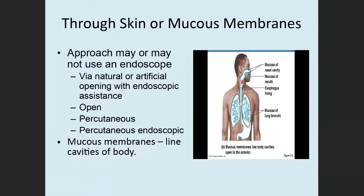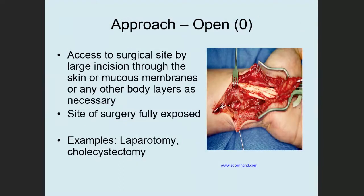The next group of approaches involves insertion of instruments through the skin or mucous membranes, which line the cavities of the body that have openings to the outside. These approaches are open, percutaneous, and percutaneous endoscopic. The open approach, value zero, involves a large incision made to access the surgical site, going through any body layers necessary. The surgical site is fully exposed — for example, via laparotomy or cholecystectomy.